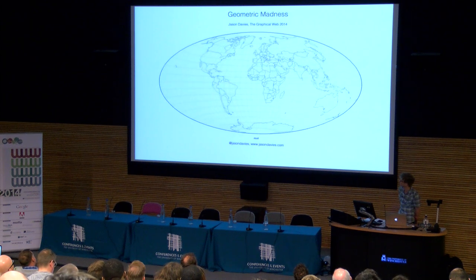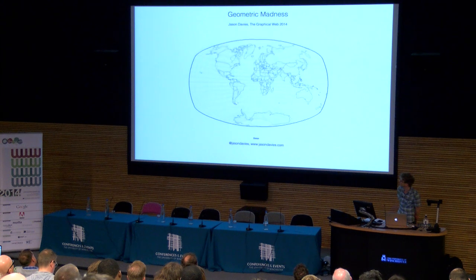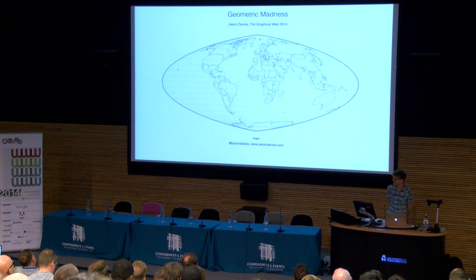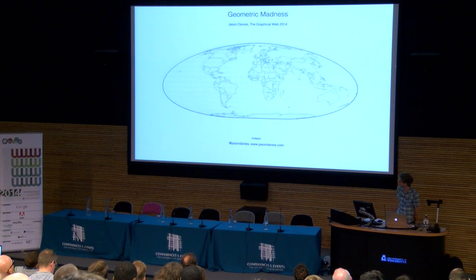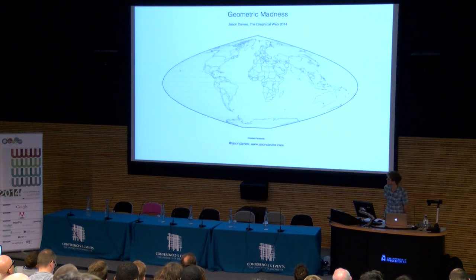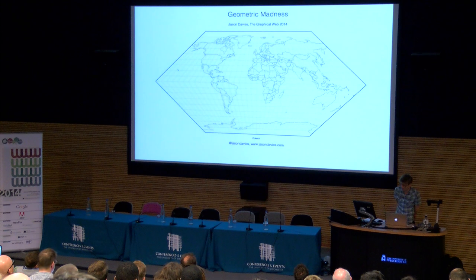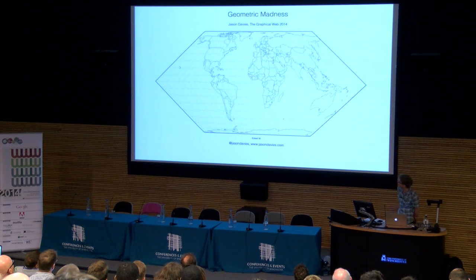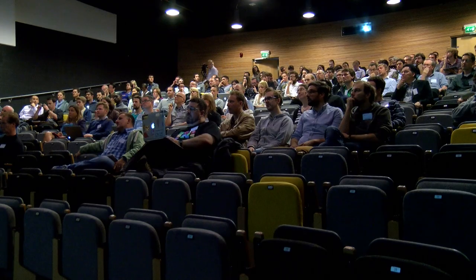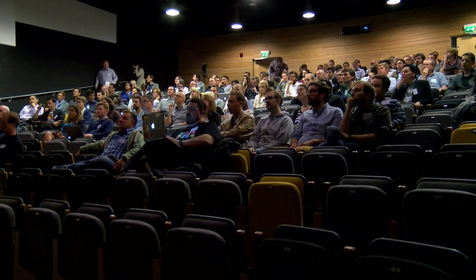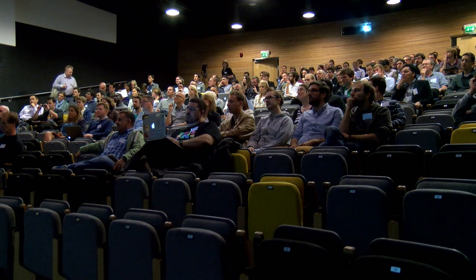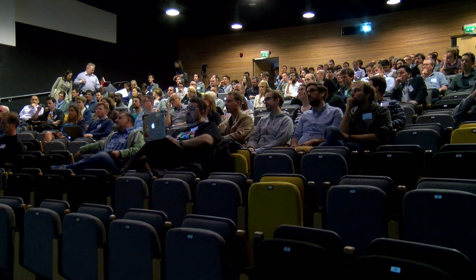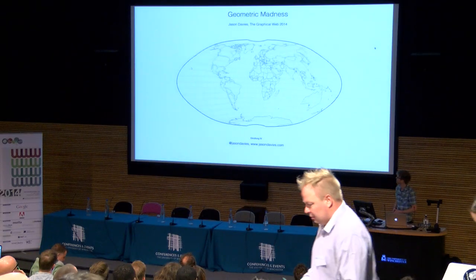These projections are all similar in that they involve the same type of clipping — a kind of cylindrical clipping where you have a single line along the anti-meridian, which is the line along the back of the globe, and you make the cut there. That makes it easy to transition between these projections.